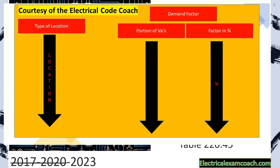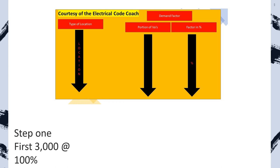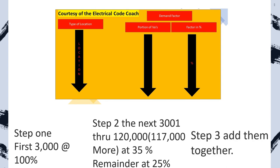Now let's break down how to do the demand factor. When looking at this table, we're going to see a multi-layered demand factor for dwelling units. Step one, we're going to take the first 3,000 VAs at 100%. Step two, we're going to take in between 3,001 through 120,000 — which is technically just another 117,000 more — and we're going to take that percentage at 35%. And then we're going to take anything above and beyond that at 25%.